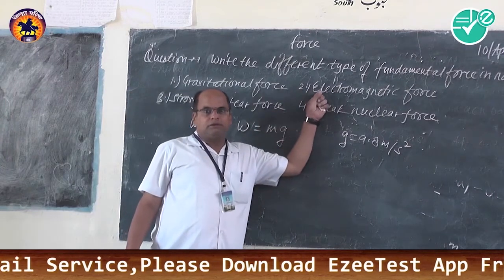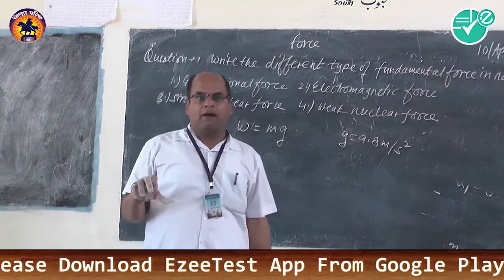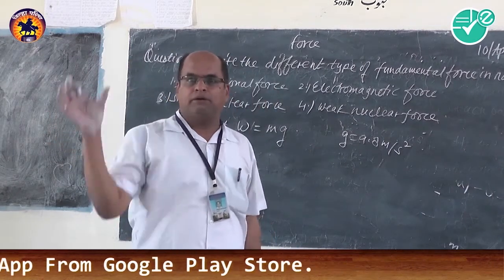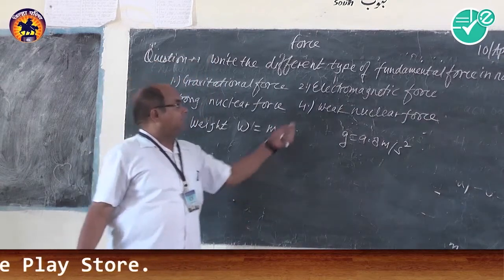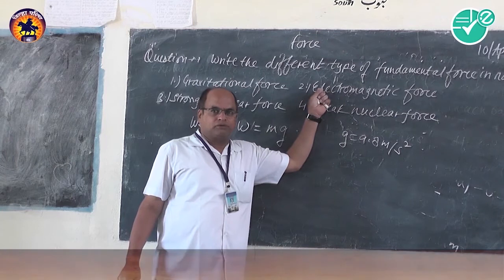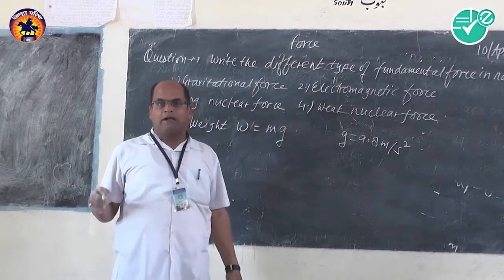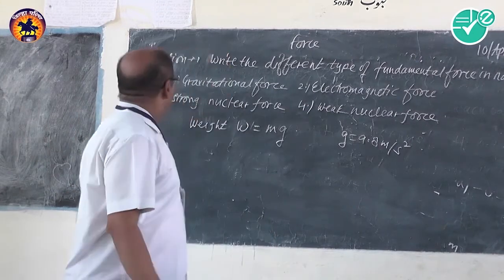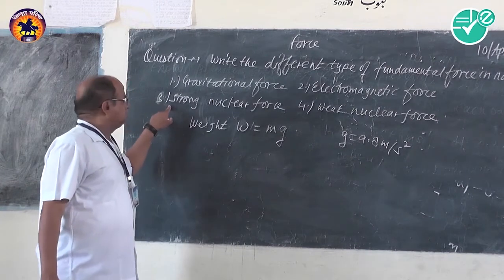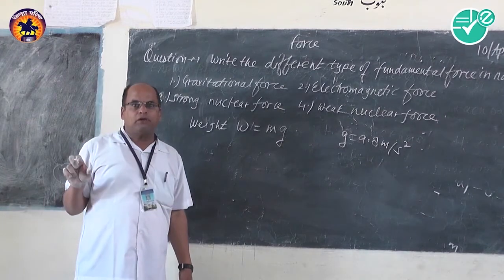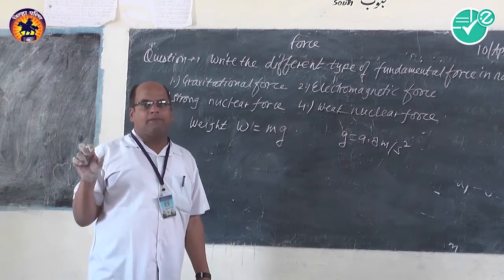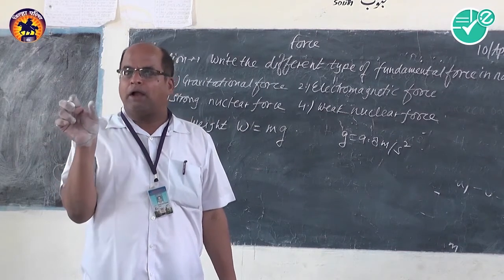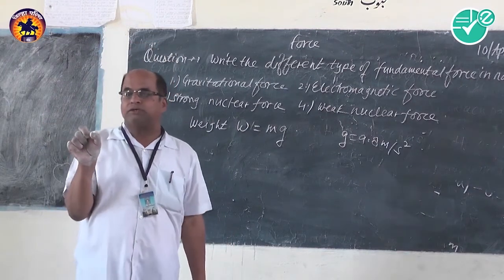Electromagnetic force: this force comes into existence when charges are moving. Then it is called electromagnetic force. Electromagnetic forces come into existence when charges are moving. Strong nuclear force: strong nuclear forces are relevant when proton-proton or neutron-neutron particles are very close to each other inside a nucleus.